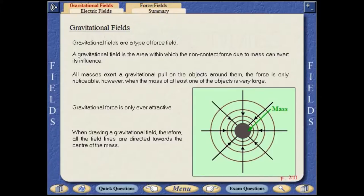All masses exert a gravitational pull on the objects around them. The force is only noticeable, however, when the mass of at least one of the objects is very large.